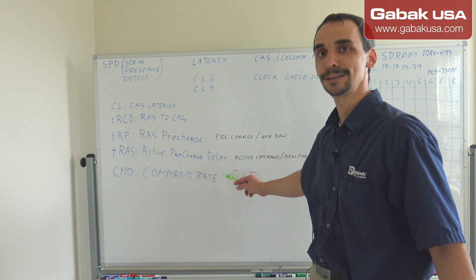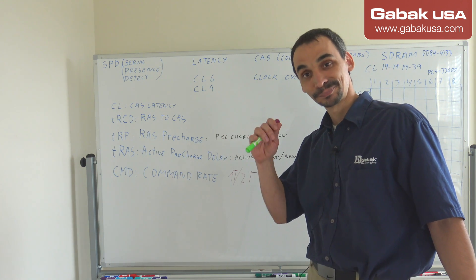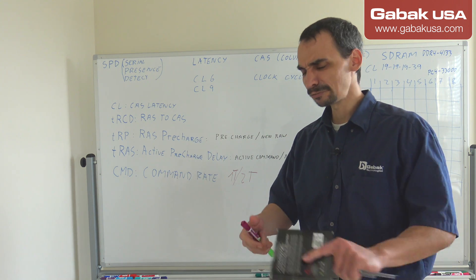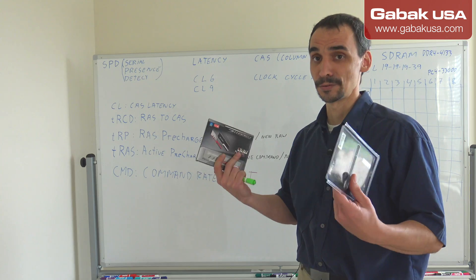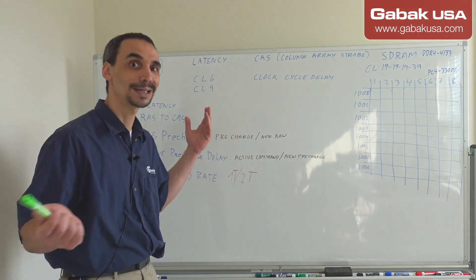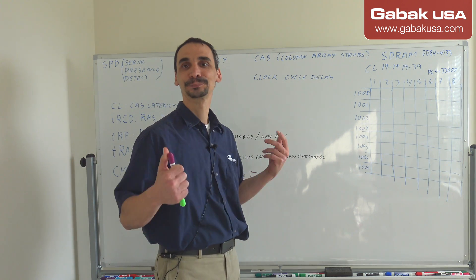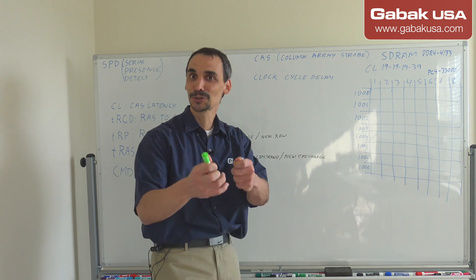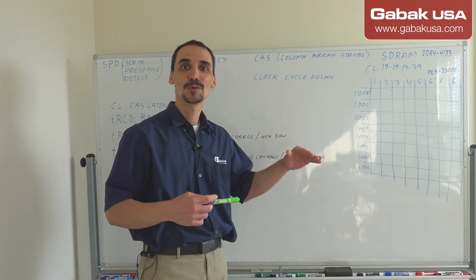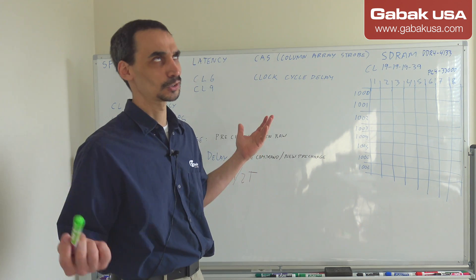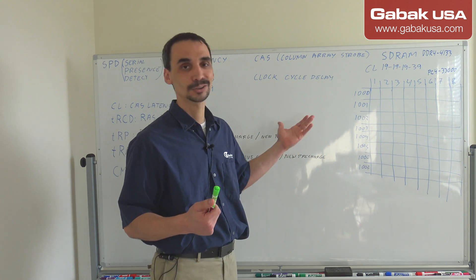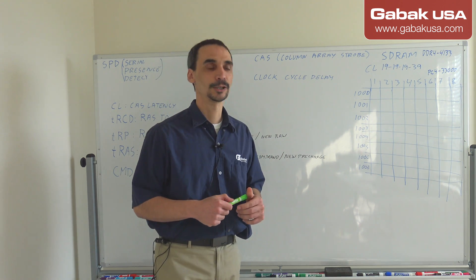Usually you'll also see the command rate, which is T1 or T2. The smaller the number, the faster the RAM will be. I'm going to explain all of these things because if you go to a computer shop or Best Buy, a salesman might push you saying the latency is lower and it will be faster, and you may not understand everything.